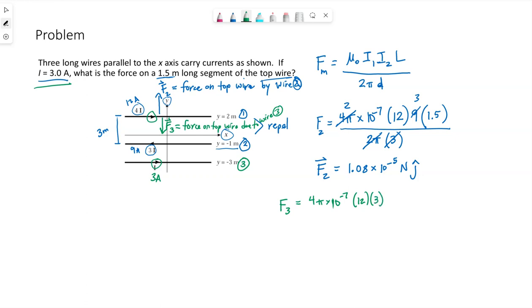So top wire, this is I1, this is I3. We just need to put the current of both wires that we're talking about in. The length we've been asked to find it on in the problem is 1.5 meters. Divide by 2 pi D. 2 pi D is from the top wire to the bottom wire. So 2 meters above the origin to 3 meters below the origin is going to be 5 meters. And that's what we want to put in, is the 5.